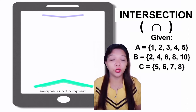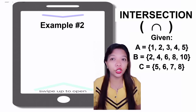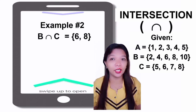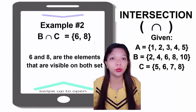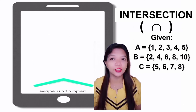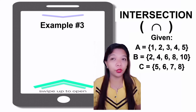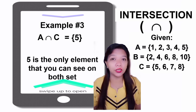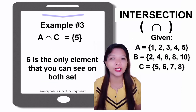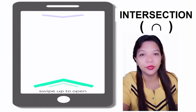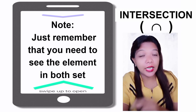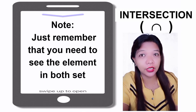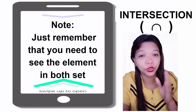For Example Number 2, B Intersect C = {6, 8}, because these elements are visible on both sets. For Example Number 3, A Intersect C = {5}. The number 5 is the only element that appears in both sets. Take note: in the Intersection of sets, you have to find elements that appear in both sets.